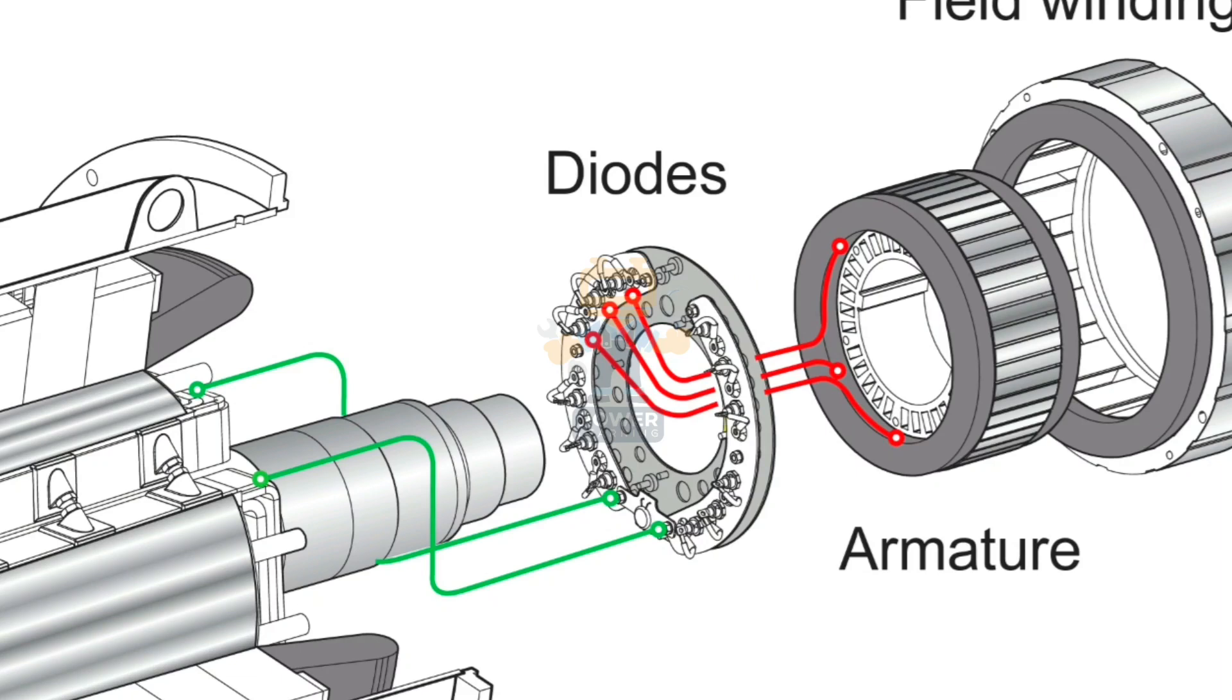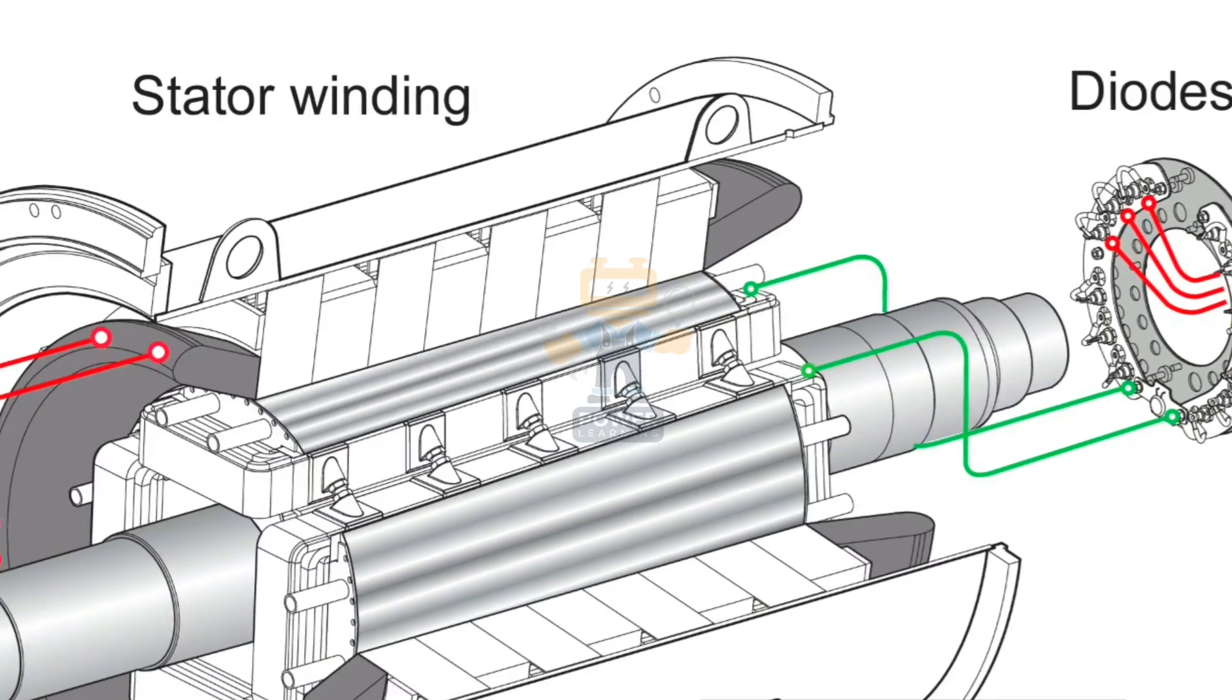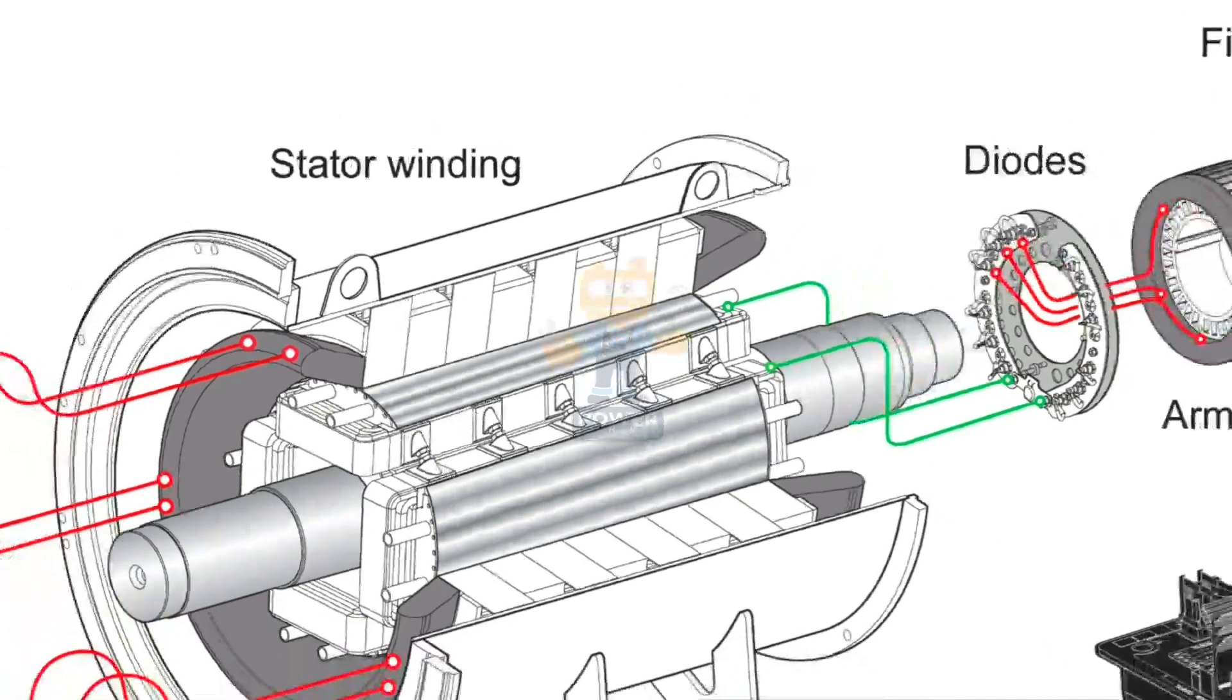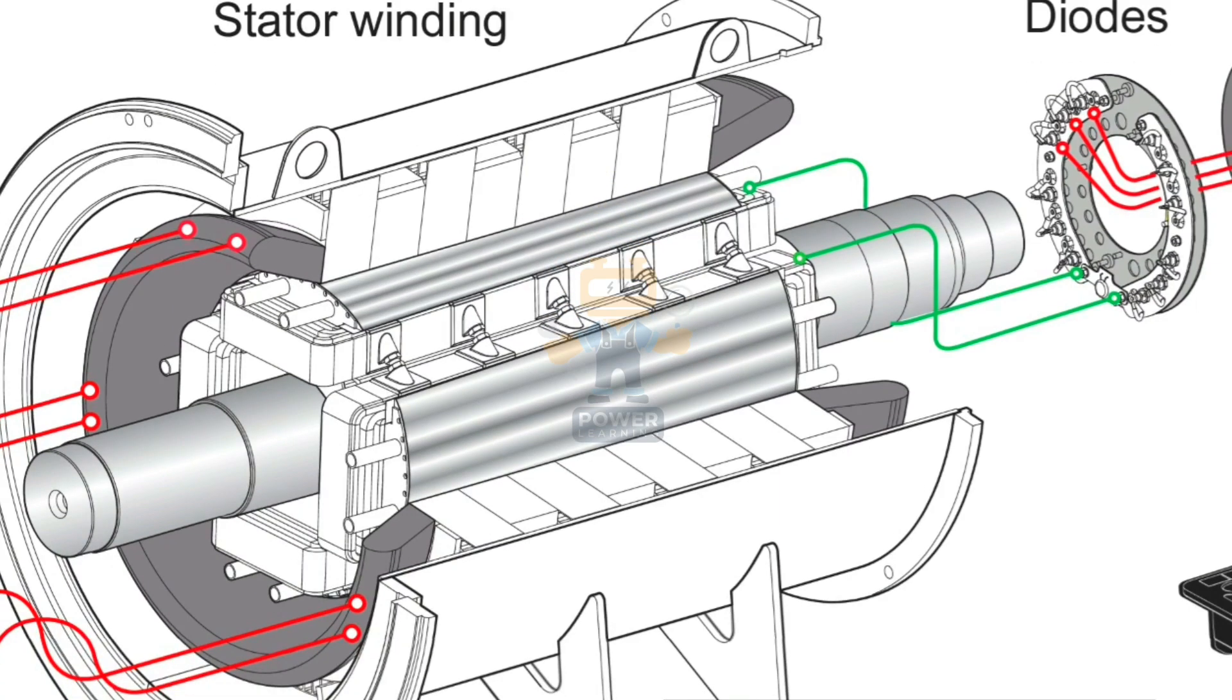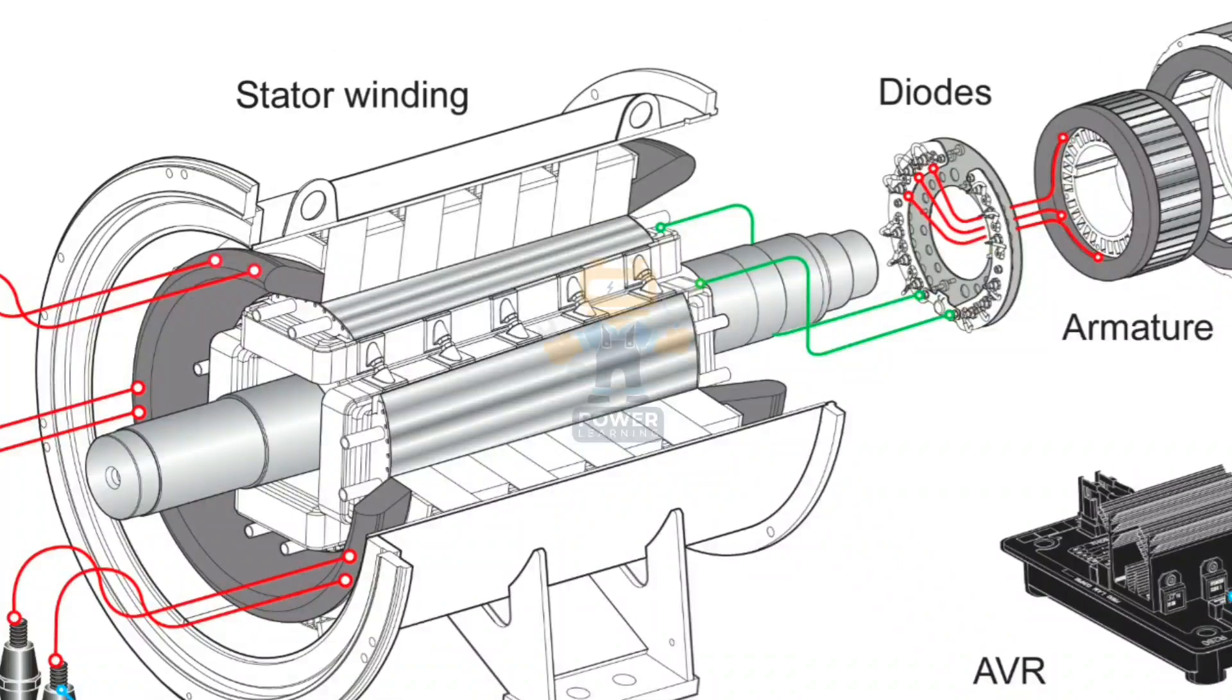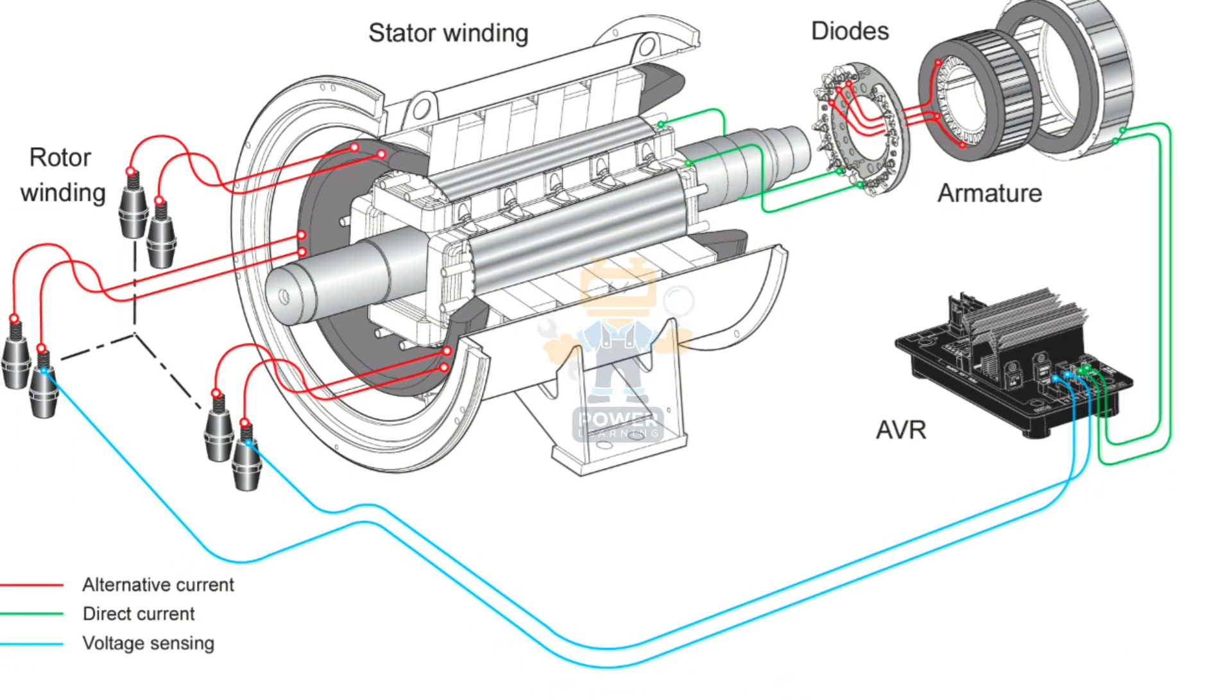Once the armature revolves inside this stationary exciter, it will produce three phases on the armature winding. We take this three-phase from armature and connect it to our diodes. These diodes will convert this AC supply into DC, and this DC goes to our main rotor. Once it reaches the main rotor, it will produce a revolving electromagnet. Once the revolving electromagnet moves inside the stationary winding of stator, electricity will be produced as per Faraday's law of electromagnetic induction.